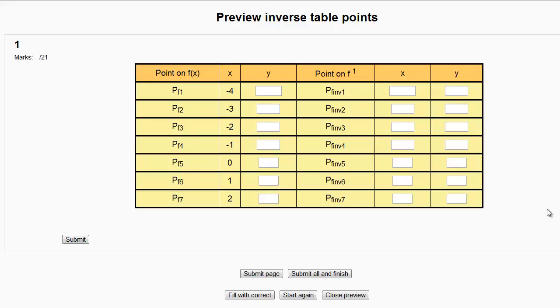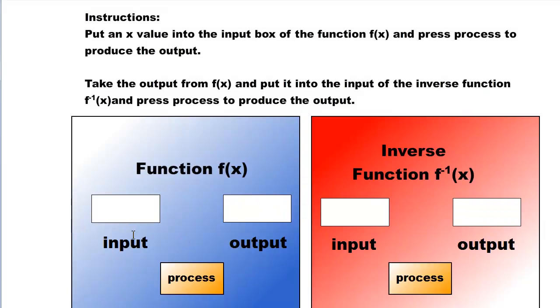We're looking at points on functions and examining their corresponding points on the inverse of the function. You're given a list of points, and all of these points are going to lie on the function itself. Now, we don't know what the function is exactly, but this tells us that we're putting a negative 4 into the function. So we're going to go to our function machine and put in a negative 4.